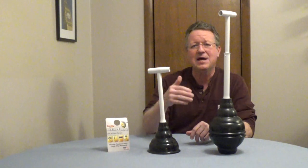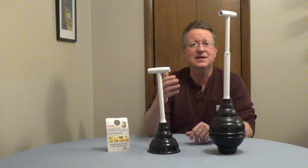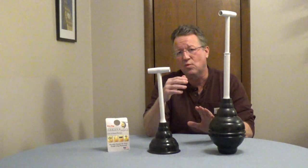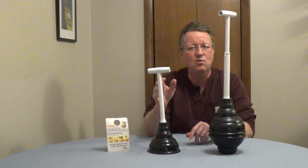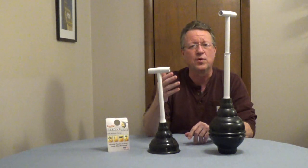And if you're plunging a bathroom sink, you'd want to cover the overflow if it has it. In a kitchen, if your sink has two bowls, you'd want to cover one of the drain openings with a wet rag while you're plunging. And for tubs, you'd want to cover the overflow with a wet rag.